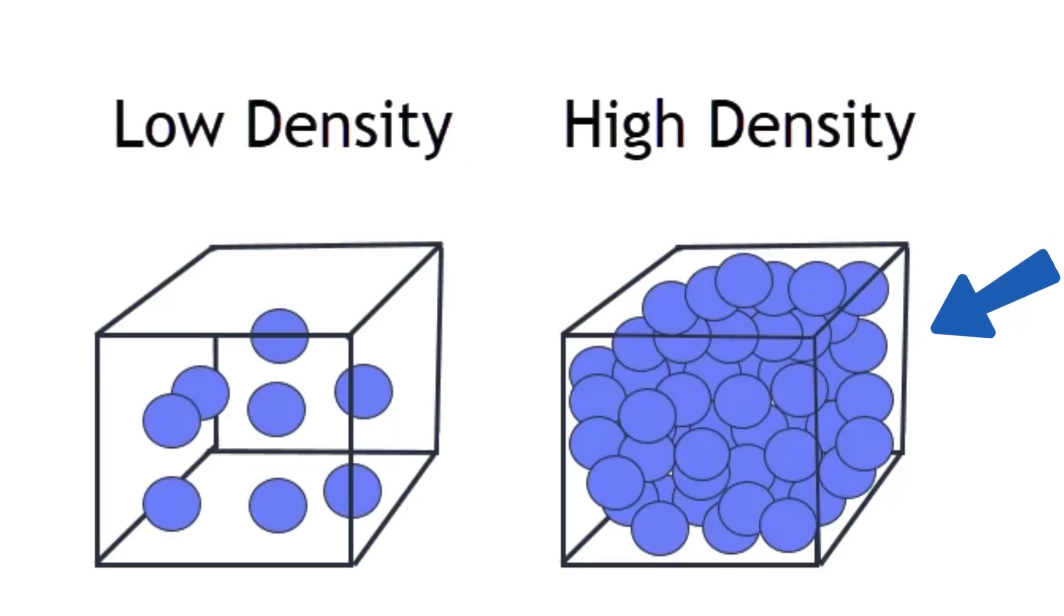Tightly packed molecules of a matter mean it has higher density. Molecules of a matter with more space between them are lower in density.